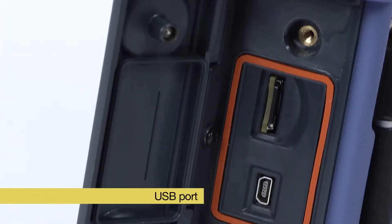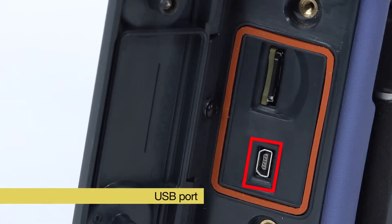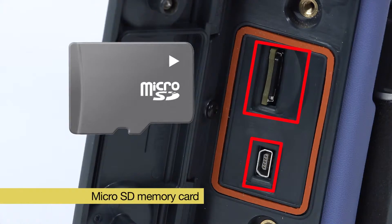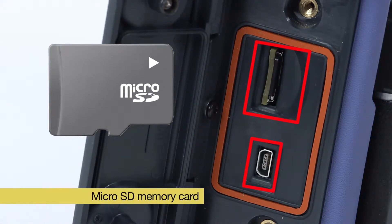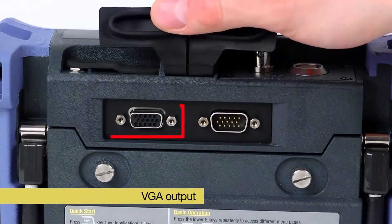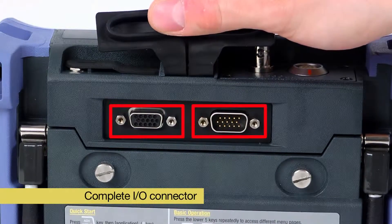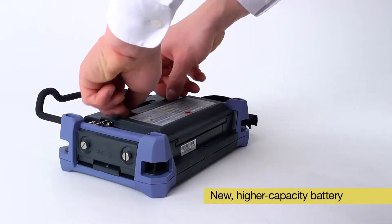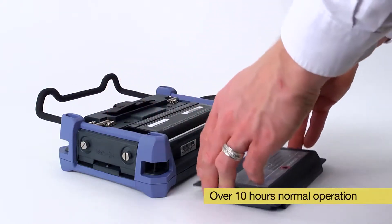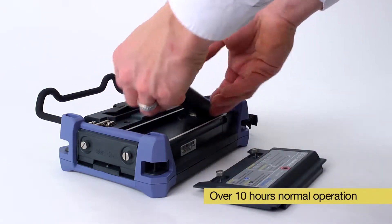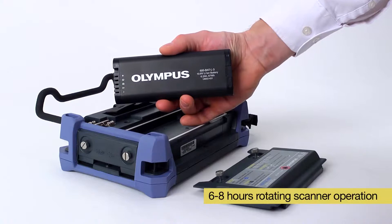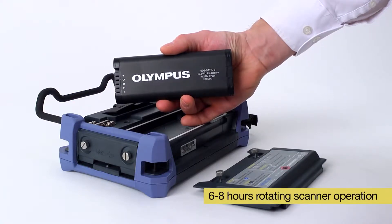The Nortec 600 has a USB port to transfer files to a computer, an onboard microSD memory card, a VGA output and a complete input-output connector. Its new, higher capacity battery allows over 10 hours of normal operation and from 6 to nearly 8 hours of rotating scanner operation.